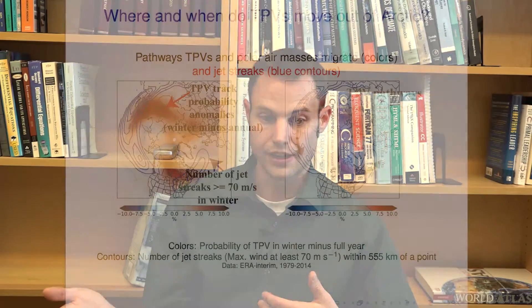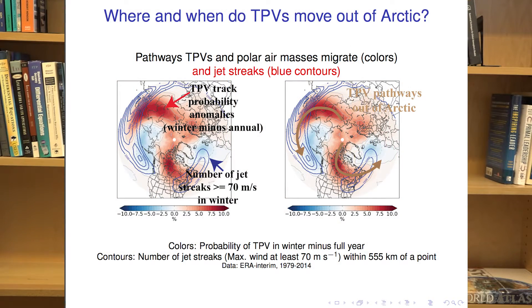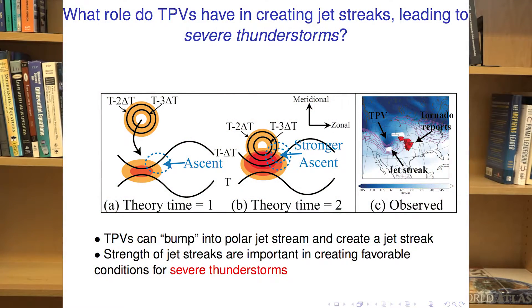Another focus is to study how, when, and where TPVs are moving out of the Arctic. We're finding there are preferred regions where these TPVs tend to move out of the Arctic, especially in winter when we have cold air outbreaks. We're also noticing a correlation between when these TPVs move into the jet stream — it creates jet streaks, which are important for surface cyclones forming in the mid-latitudes — so we're studying these pathways and their impacts.